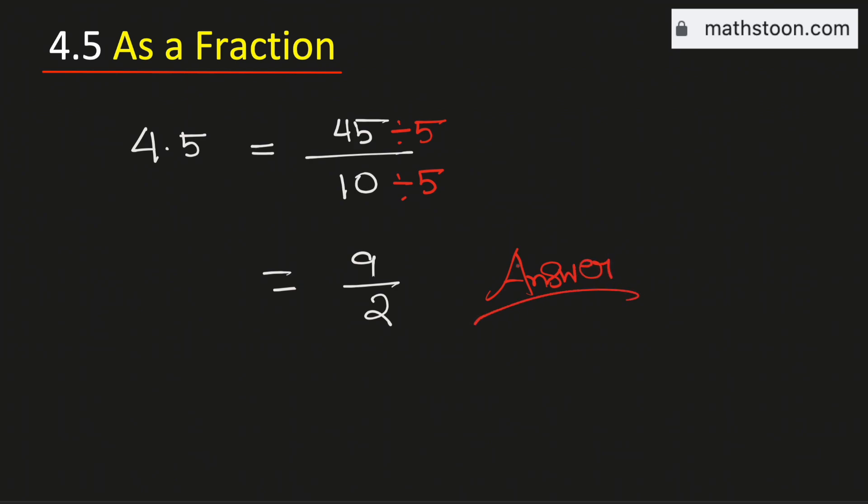But notice that this is an improper fraction. As a mixed number, it will be equal to 4 and 1 half. Therefore, 4.5 as a mixed number is equal to 4 and 1 half.